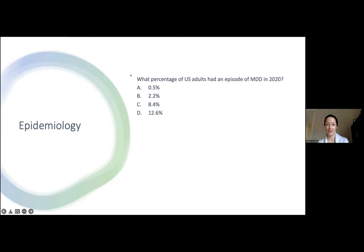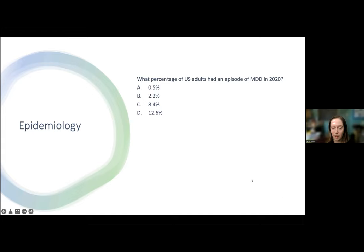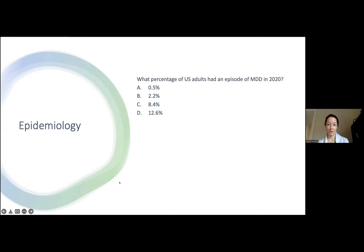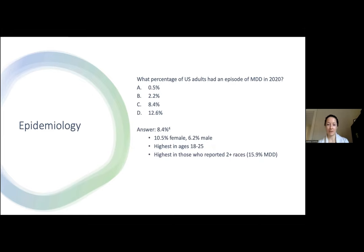What percentage of US adults had an episode of depression? Most of you voted for the highest option, which is pretty close — but it's actually 8.4%, which is still pretty high, close to one in ten people. It's a little higher in females, higher in younger populations, and higher in those who reported more than one race. And of course, COVID has not helped any of that.